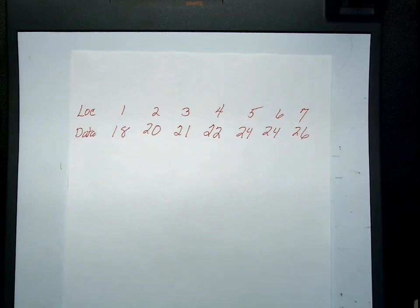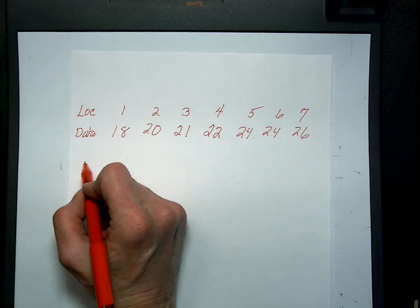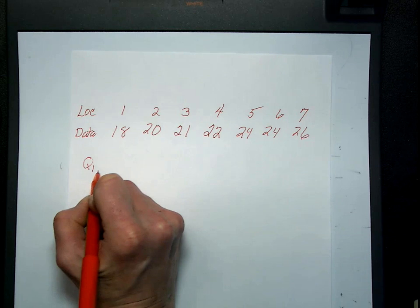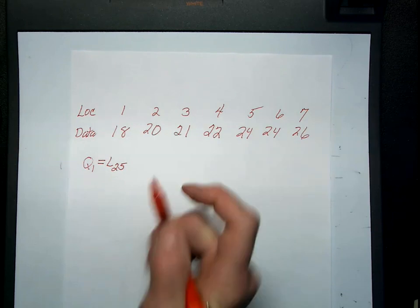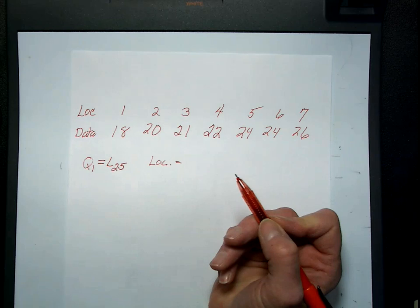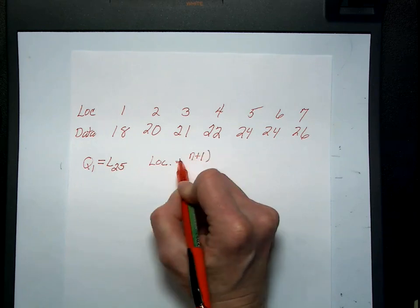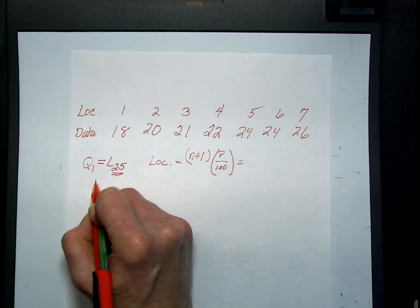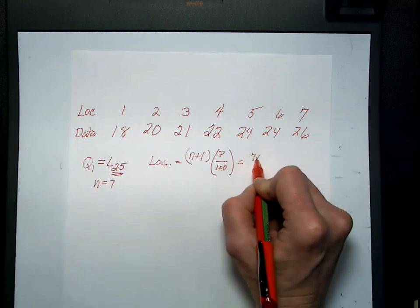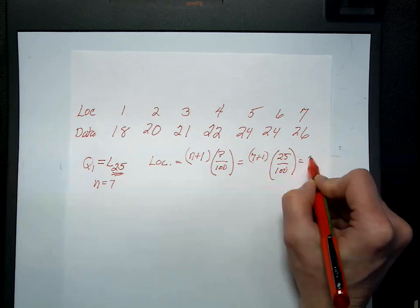So quartiles or percentiles. The first data point I want to calculate is the first quartile, which is also the 25th percentile. First quartile and the 25th percentile are the exact same point. We are going to locate it from the formula that I gave you in my PowerPoint presentation: (N+1) times the percent over 100. In this case, it's 25 percent, and N is 7. So (7+1) times 25/100, and we get an even 2.0.